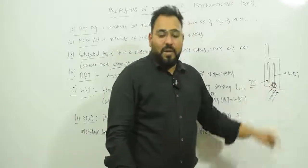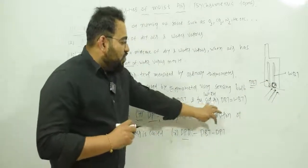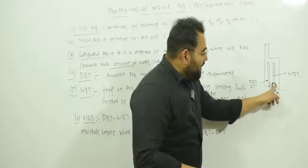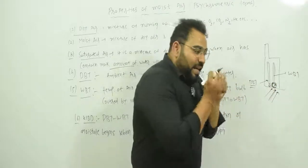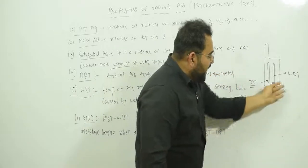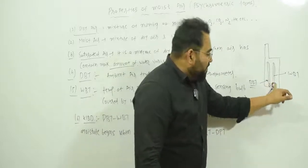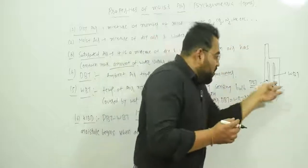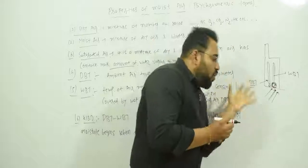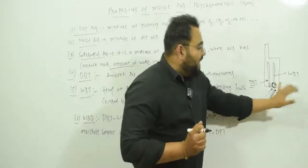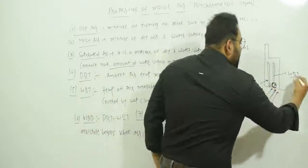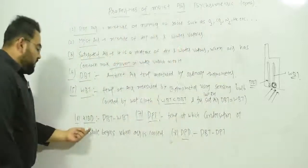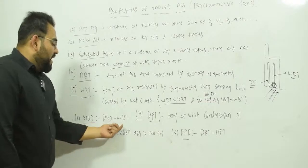Always remember: wet bulb temperature is less than dry bulb temperature because evaporation causes cooling. However, for saturated air — that is, at 100 percent relative humidity — dry bulb temperature equals wet bulb temperature. This is because when saturated air passes over the wet cloth, evaporation does not occur, as the air is already holding its maximum amount of water vapor and no more can be added.